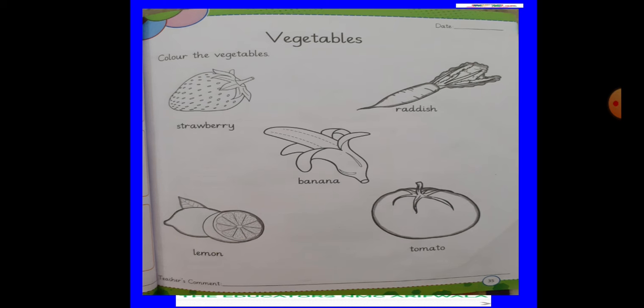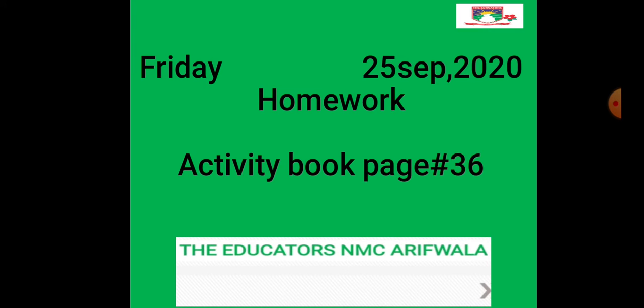Many children don't make outlines. Please make sure you make an outline first. Friday, date 25th September 2020. Activity Book page 36.